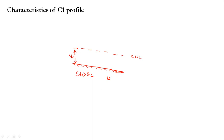The critical depth line can be found easily by applying the condition of critical flow: Q² / G = A³ / T. If you apply this condition, everything is known — the discharge and channel dimensions are known — and the only unknown is the critical depth. One important thing to remember is that the critical depth has nothing to do with the bed slope; it depends only on the discharge and channel geometry. So this critical depth line will not change even if you change the slope.